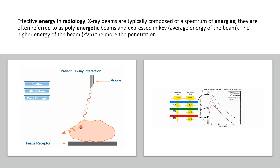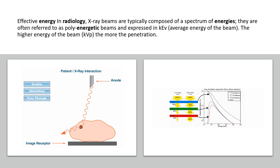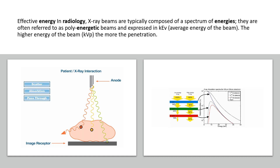The interaction of radiation used for the patient has three different modes. One, the radiation can pass completely through without any interaction. Two, it can be totally or partially absorbed. And three, the radiation can be scattered. Only the radiation that penetrates the patient can be received by the image receptor, and this is the only amount of radiation that can create an image.